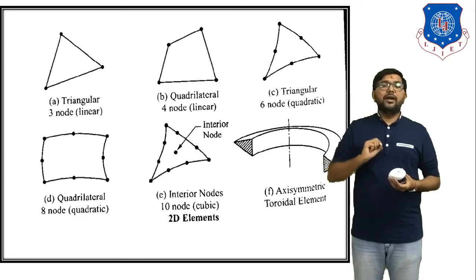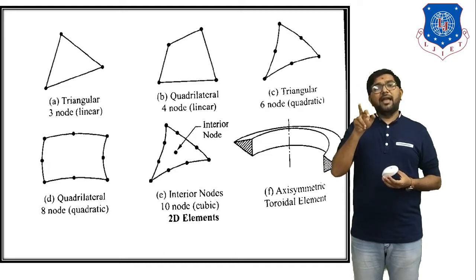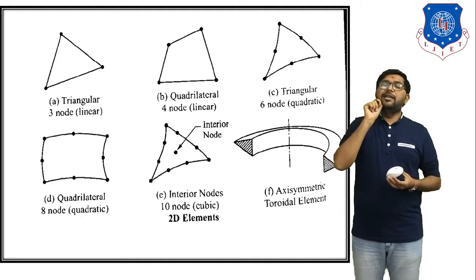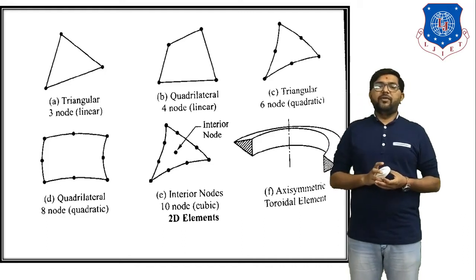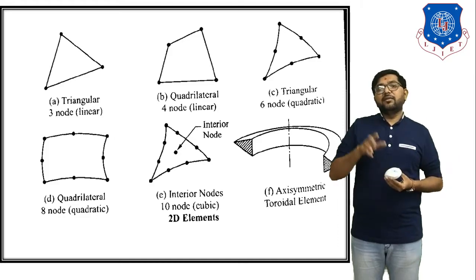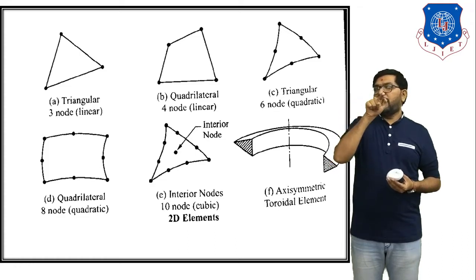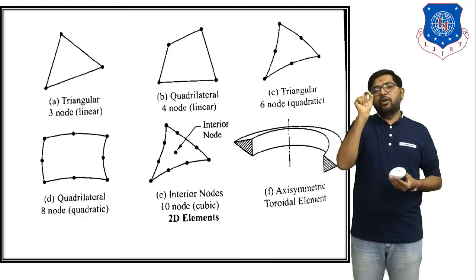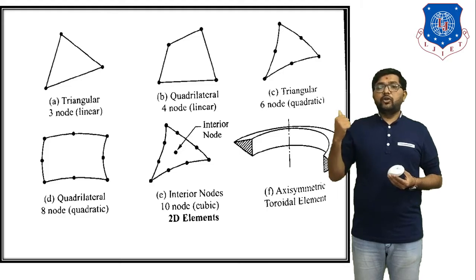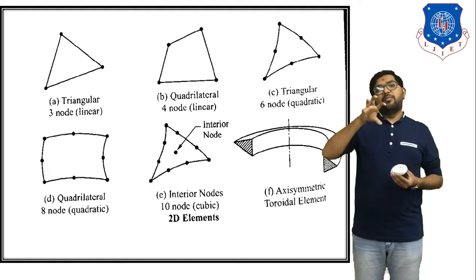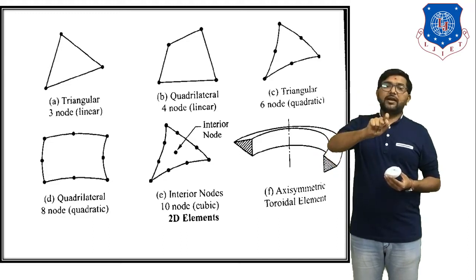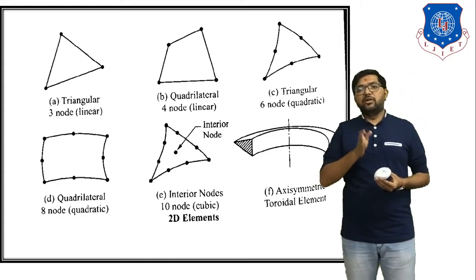Figure C shows a triangular 6-node element — a triangle where 3 nodes are corner points and 1 node is at the midpoint of each side, giving 6 total nodes. Next is the quadrilateral 8-node element — 4 nodes at each corner point and 1 node at the midpoint of each side, giving 8 total nodes. Then there is the interior node with 10-node cubic — 3 nodes at each corner, 3 nodes at each midpoint, and 1 interior node at the center, giving 10 nodes total. This is also a type of 2D element.